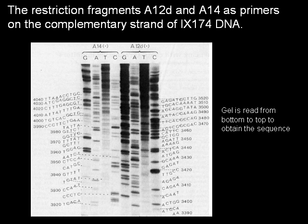In the original paper, the restriction fragments A20 and A14 were used as primers on the complementary strand of phiX174 DNA. The inhibitors used were ddTTP, ddATP, and ddCTP. The electrophoresis was on a 12% acrylamide gel. The DNA sequence is written from left to right and upwards beside the corresponding bands on the radioautograph.